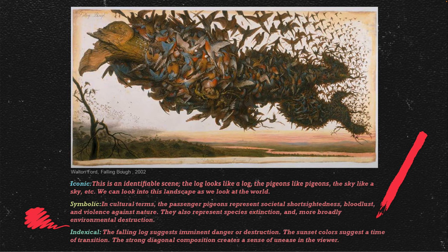Another example of semiotics in action is Walton Ford's falling bow image. Cultural information can help inform or shift meaning for the viewer. The iconic part: the log looks like a log, the pigeon looks like a pigeon. Symbolically, the passenger pigeons represent societal short-sightedness, blood lust, and violence against nature. Indexically, the falling log suggests imminent danger or destruction. More background information is needed for the symbolic and sometimes the indexical versions of signs in semiotics.